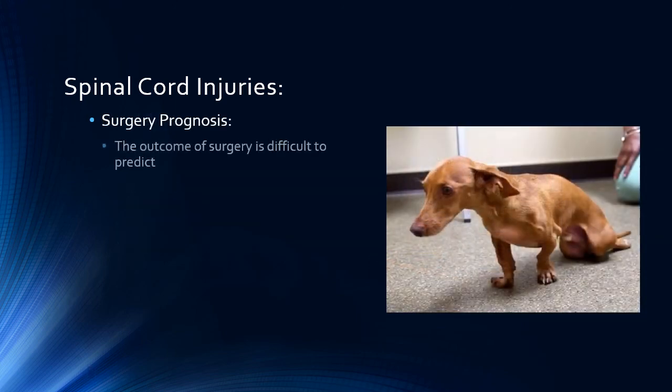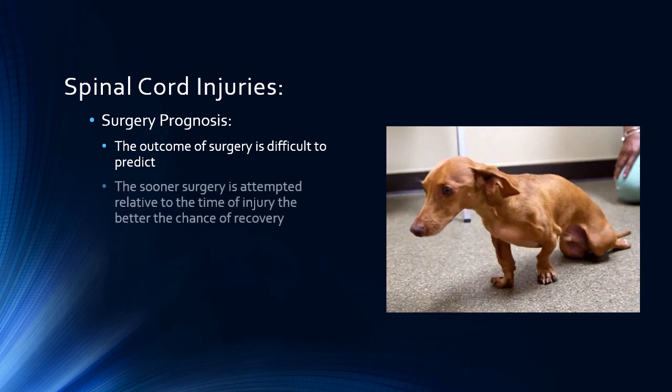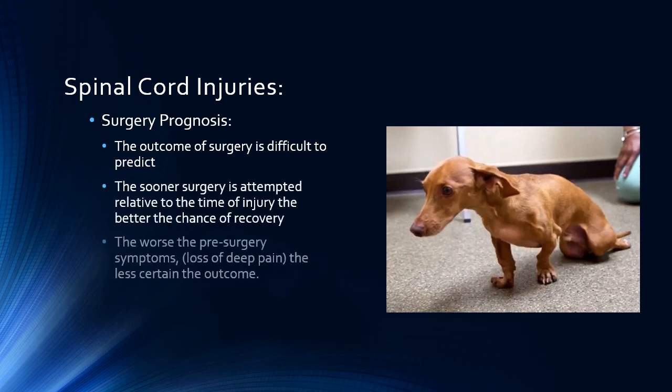The outcome of spinal surgery is hard to predict. There are many factors affecting the outcome, including the location and severity of the spinal injury, the length of time the pet has been experiencing loss of function, the physical condition and weight of the pet going into surgery, as well as the pet's age. If your pet is faced with having spinal surgery, the neurosurgeon will be better equipped to give you a prognosis based on your pet's specific circumstances.